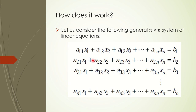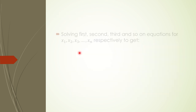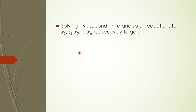Later on we will be talking about when the iterations are convergent. At the beginning, you need to know that the diagonal entry should not be zero. You need to solve the first equation for x1, the second equation for x2, the third equation for x3, and so on up to xn.